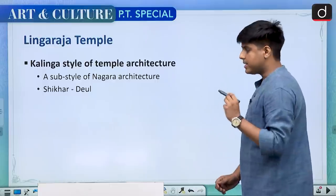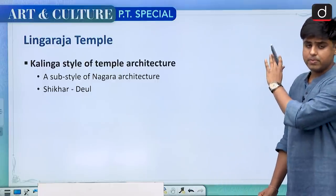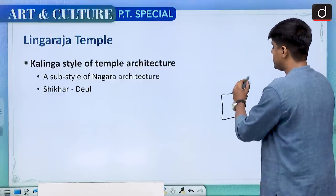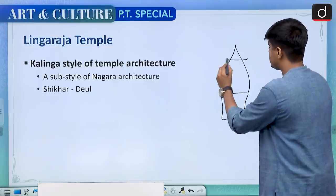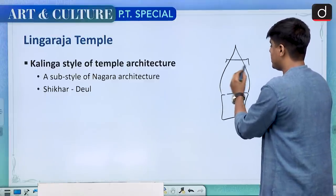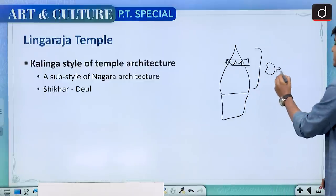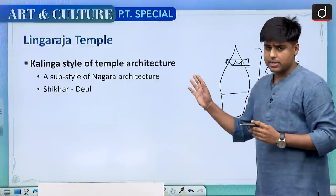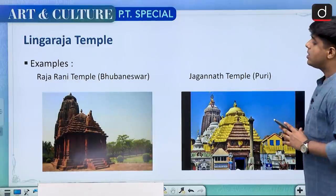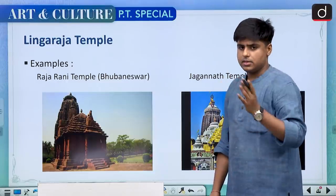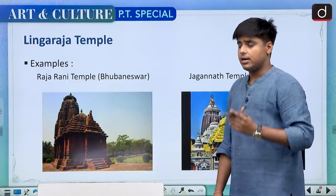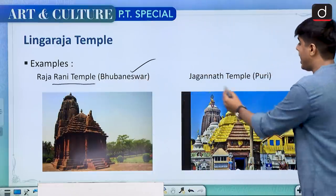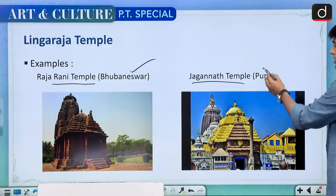If you notice the image, above the sanctum sanctorum the shikra here is called a diul. This is a distinguishing feature of Kalinga style of temple architecture. Other examples of Kalinga school of temple architecture are the Raja Rani temple, also located in Bhoganeshwar, and the very famous Jagannath temple located in Puri.